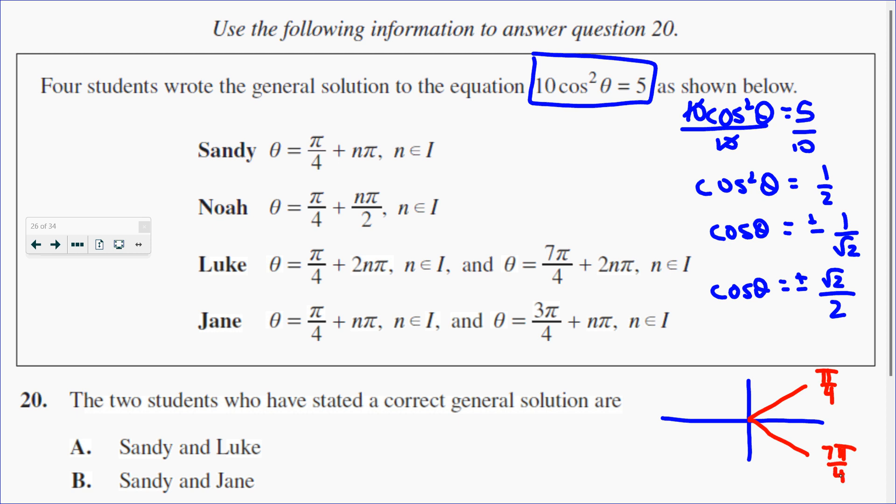But since plus or minus, we also have a solution in quadrant number 2, where the numerator is 1 less. So 1 less than 4 is 3.